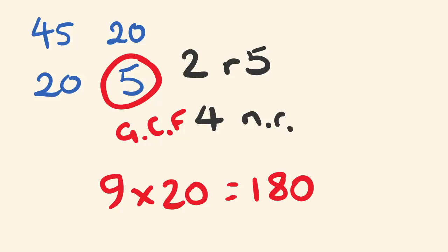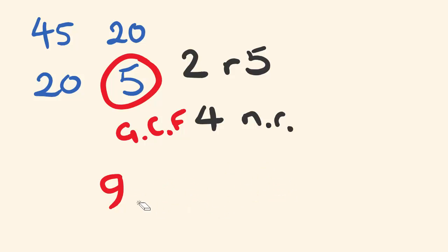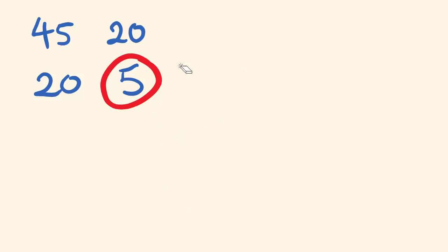You might say that's not necessarily always faster than the other method — and you're correct. But this method is really great especially when you start getting into nastier numbers. Let's try the least common multiple of 1040 and 455. We divide the smallest into the largest: 1040 divided by 455.